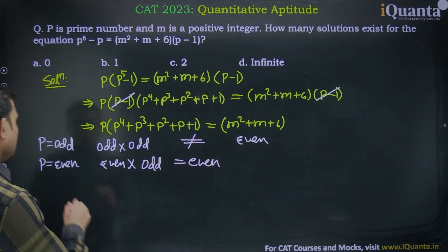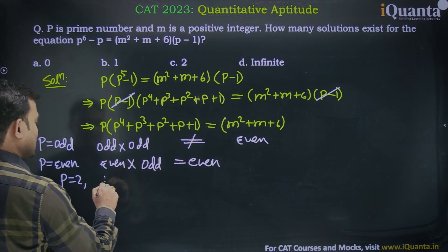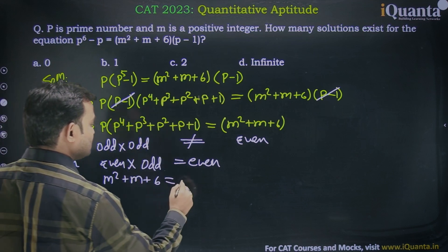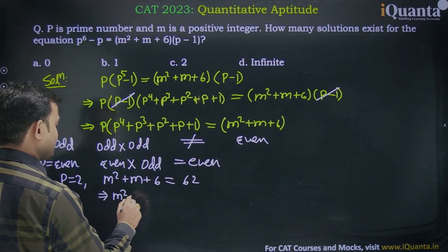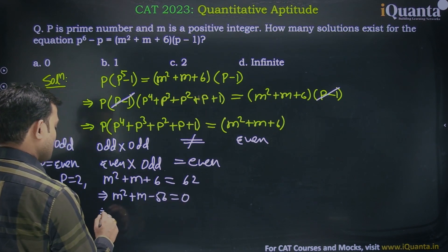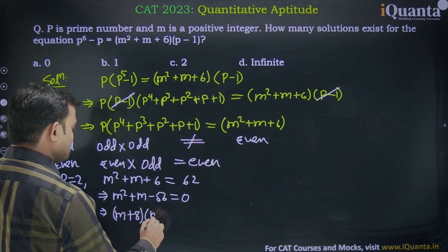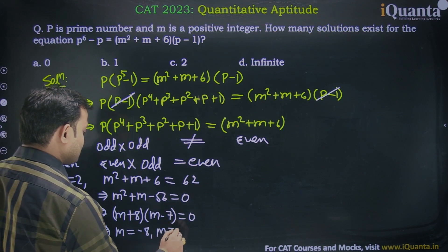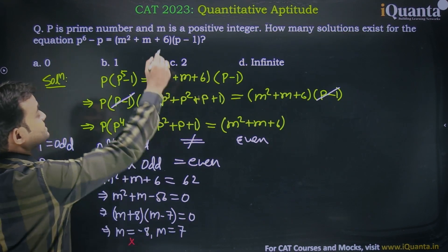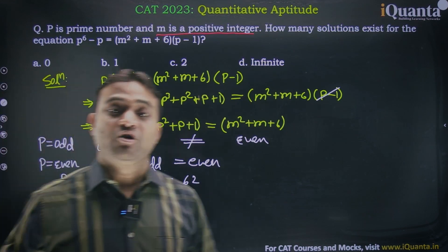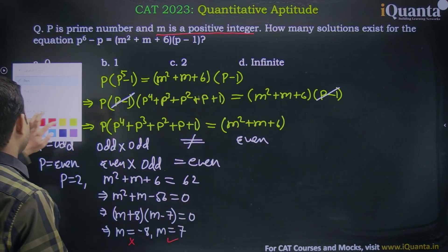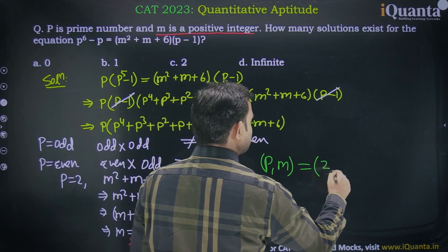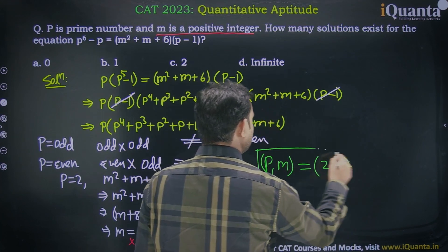So we can take p equal to 2. Substituting p equals 2, we get m squared plus m plus 6 equals 2 into 31, which is 62. So m squared plus m minus 56 equals 0, which factorizes as (m plus 8)(m minus 7) equals 0, giving m equals minus 8 or m equals 7. Since m must be a positive integer, m equals minus 8 is not valid. Therefore m equals 7 is the only possibility. So for the pair (p, m), the only solution is p equals 2 and m equals 7 — only one solution is possible.